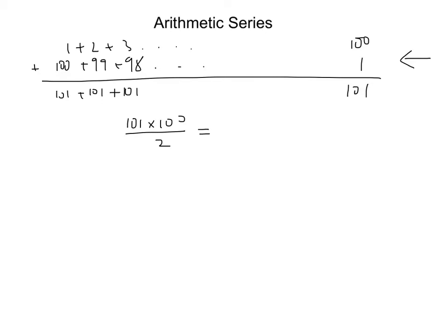So this gives us 10,100 divided by 2, which equals 5,050. To show that we're summing, we write S₁₀₀, or a small 100 as the subscript.